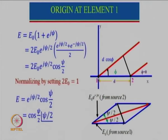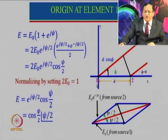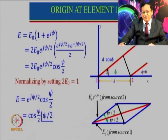These two half power beam widths can be used to estimate directivity using the formula 4π/(θ_E × θ_H). Here θ_E = 60° = π/3 and in the other plane θ = 2π. Instead of taking two dipoles symmetrical with respect to the origin, we can take one antenna at the origin and the second at a distance d. The E field should remain the same regardless of placement, but let us look at the derivation.